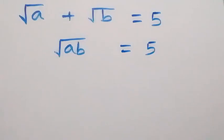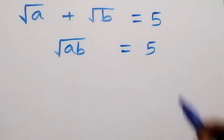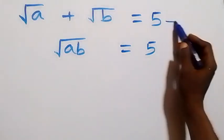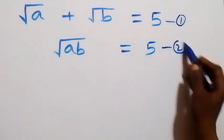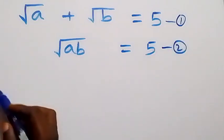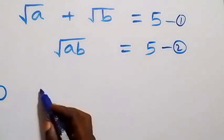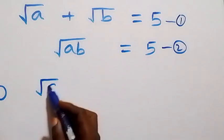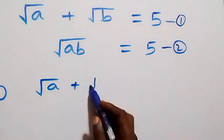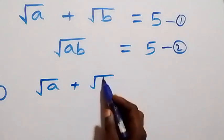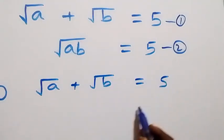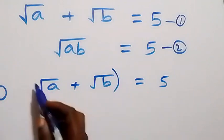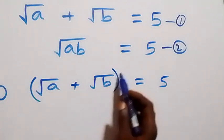Hello, you are welcome. How to solve for a and b in this system of equations. Let this be equation one and this be equation two. From equation one, which is root a plus root b equals to five, let's square both sides.